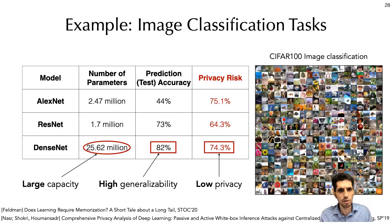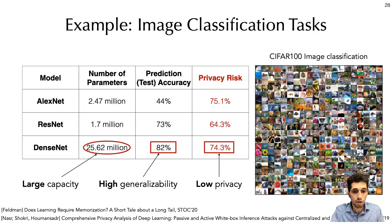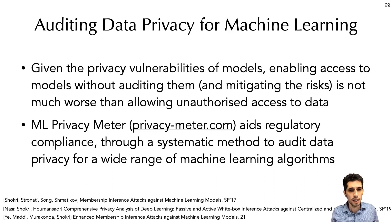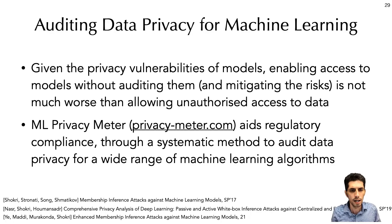Another example is on image classification models, where we observed that as the number of model parameters increases, the model becomes more vulnerable to attacks, even though this large capacity could help the models to learn with high generalizability. So to conclude, given the privacy vulnerabilities of machine learning algorithms and the fact that their capacity to learn complex tasks increases, I would say enabling access to models without auditing them and without mitigating their privacy risks would not be much better than allowing unauthorized access to data. So there are serious privacy risks, especially because we are training many models on sensitive data, and it's not a matter of one single model being used.